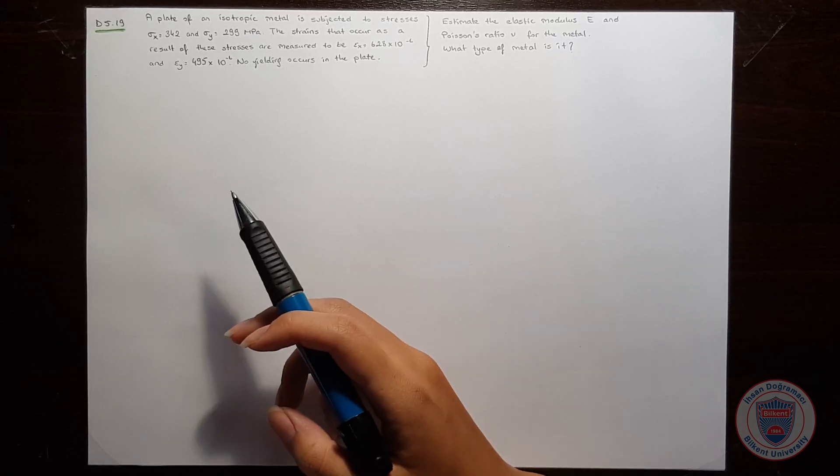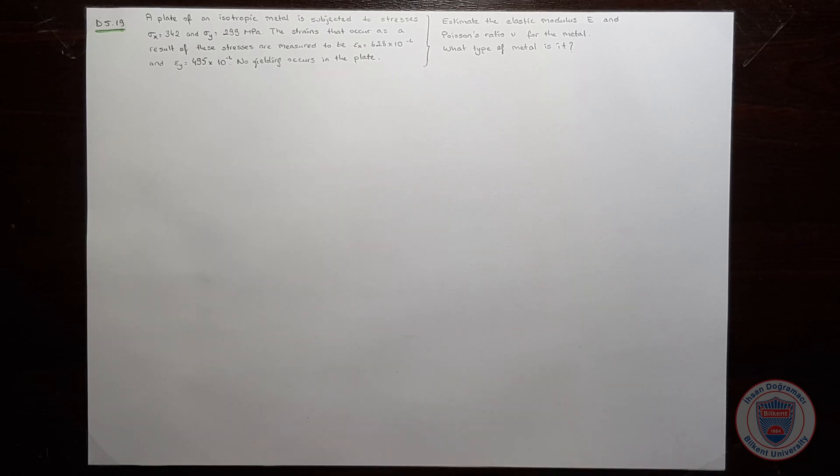A plate of an isotropic metal is subject to the stresses σx and σy, and we know the strains that occurred as a result of these stresses. No yielding occurs in the plate.